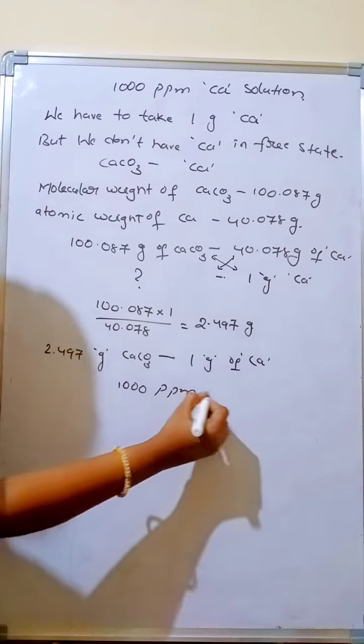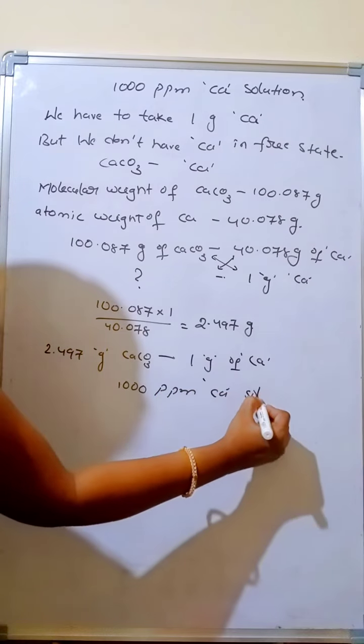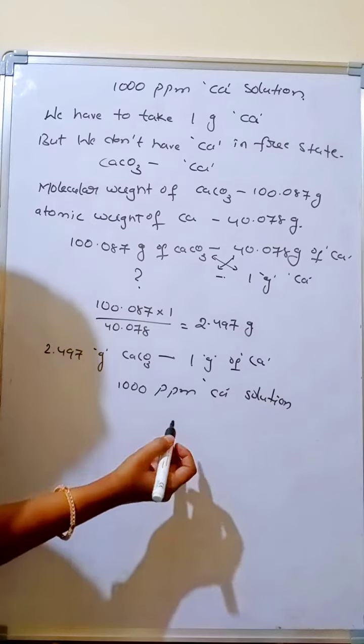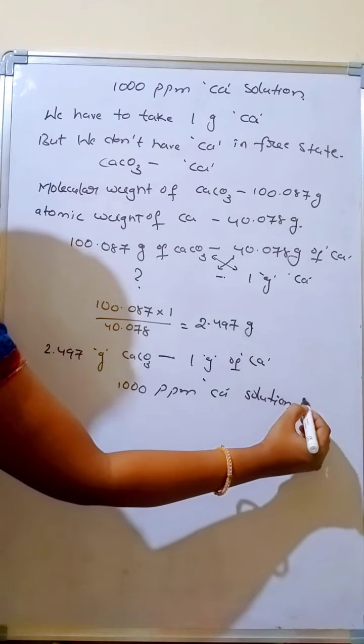So if we dissolve 2.497 grams of calcium carbonate in 1000 ml water, it is 1000 ppm of calcium solution.